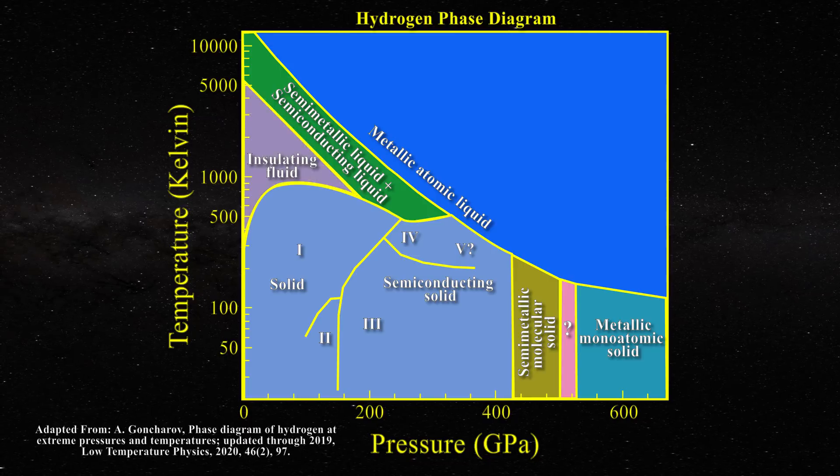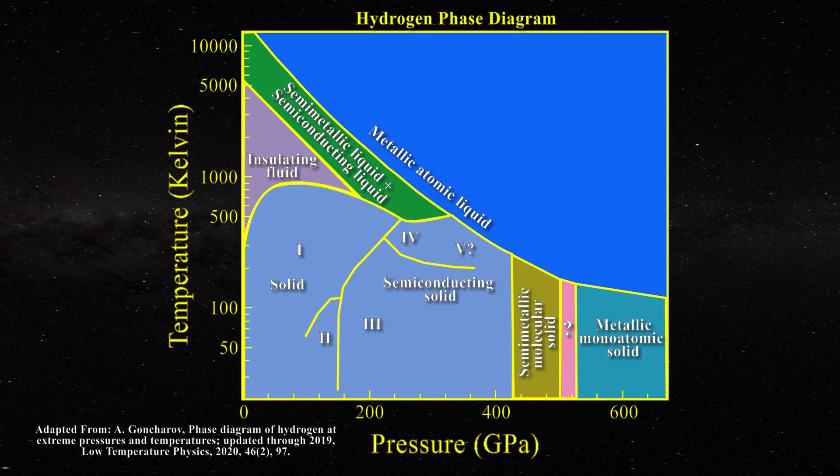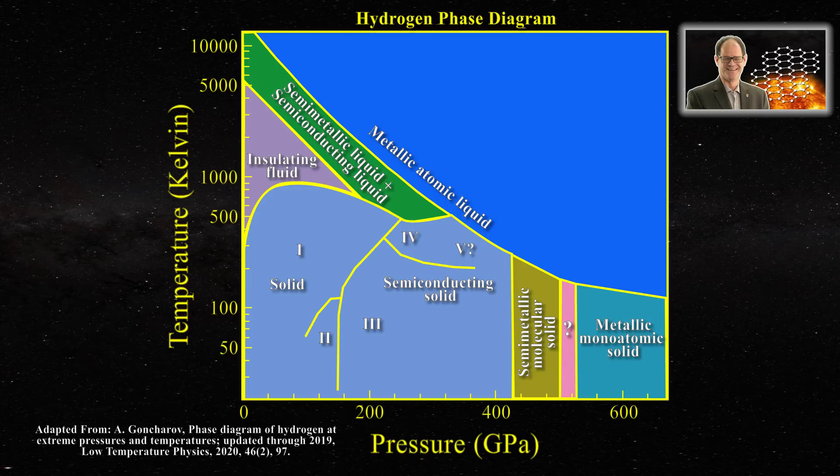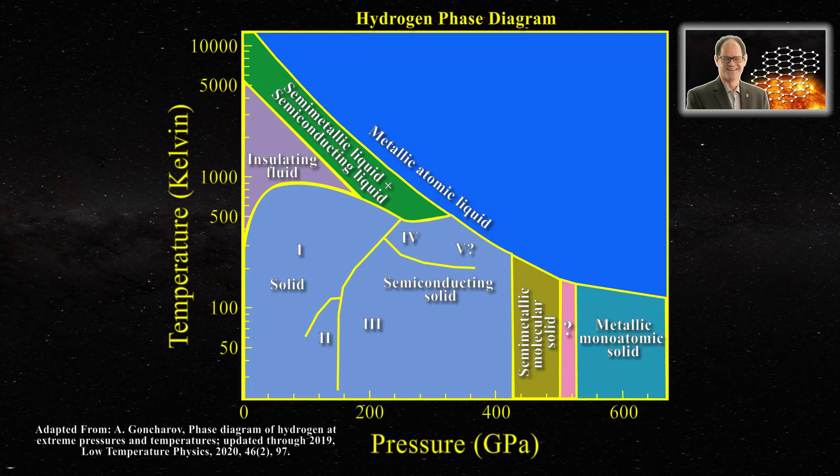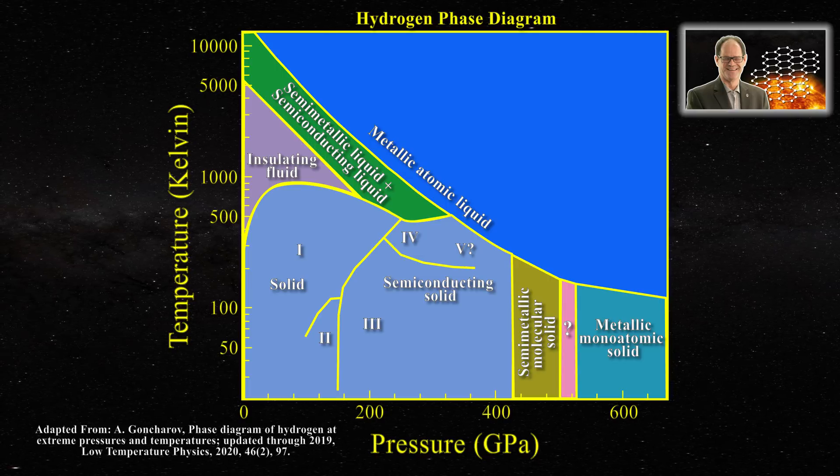Just above the region on the left at low pressures, there is a portion of the diagram where hydrogen is said to act as an insulating fluid. In this video, I introduce the concept of insulators and metals by discussing the valence and conduction bands in hydrogen. If you have not seen that video, take a look.